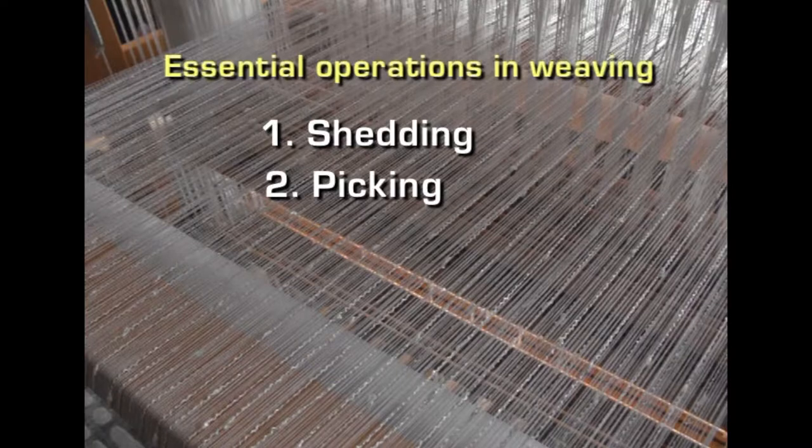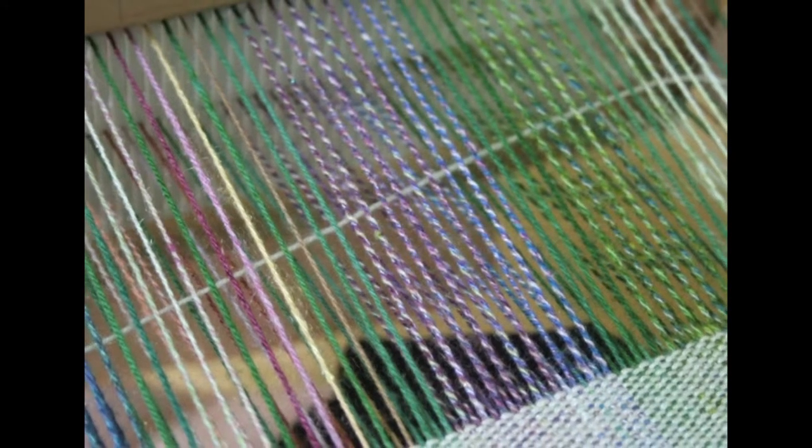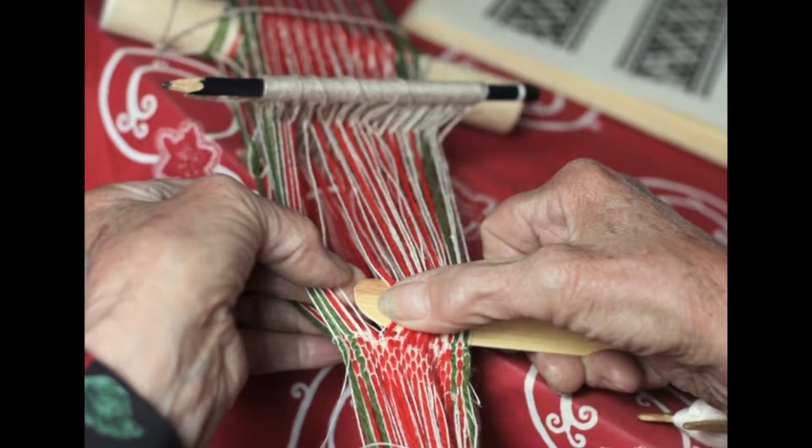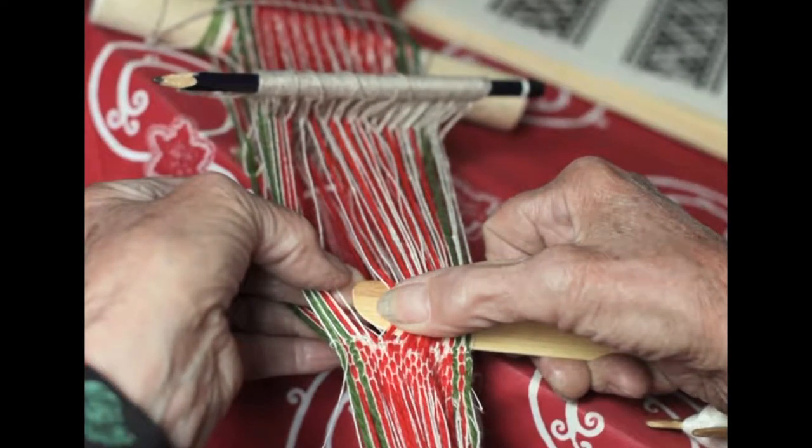The second operation is picking, which facilitates the insertion of the weft yarn, or the pick. The term 'picking' probably comes from earlier times before the invention of the loom, when people used to insert the weft by hand, taking a small wooden piece and passing it over and under the warp yarns one by one. So picking actually completes the insertion of the weft yarn into the shed.